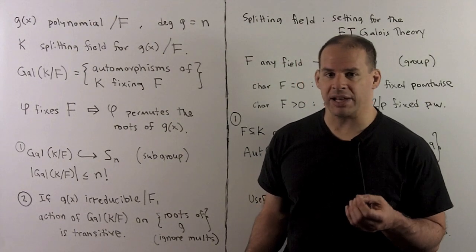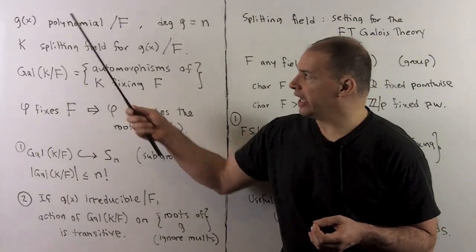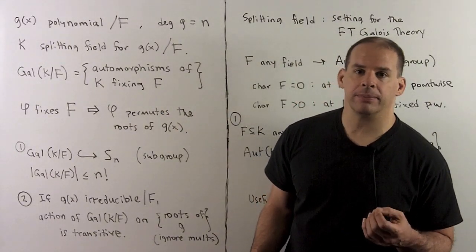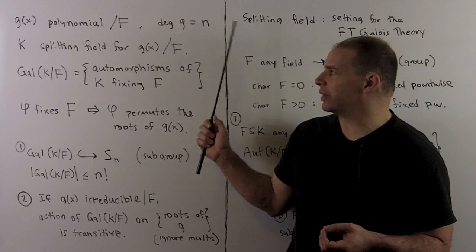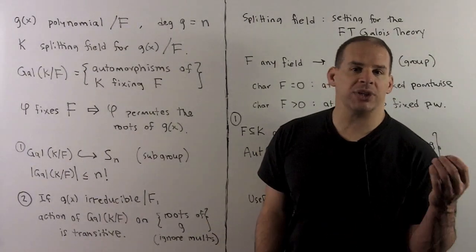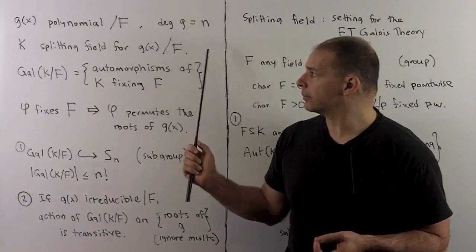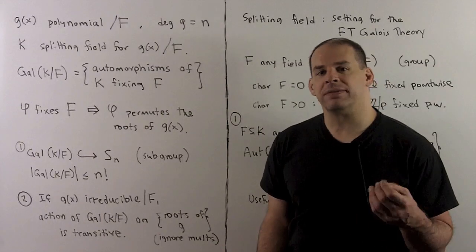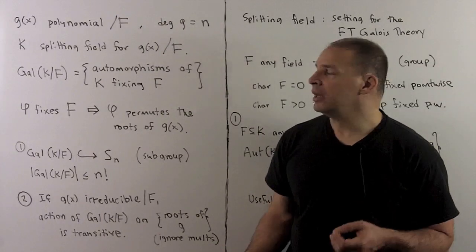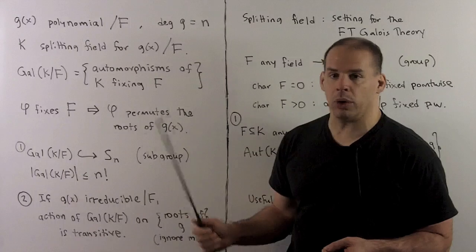Let's review our main result from last time. We have G, a polynomial with coefficients in some field F, the supposed degree of G is equal to N, and we choose K, a splitting field of G over F. With that, we can define the Galois group of K over F to be the set of automorphisms of K fixing F pointwise.